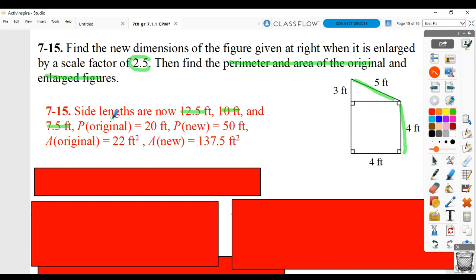So the perimeter of the new would be adding the sides up and getting 50 feet. The perimeter of the original is just taking these values and adding them. This is still 4, and that would be 20 feet.